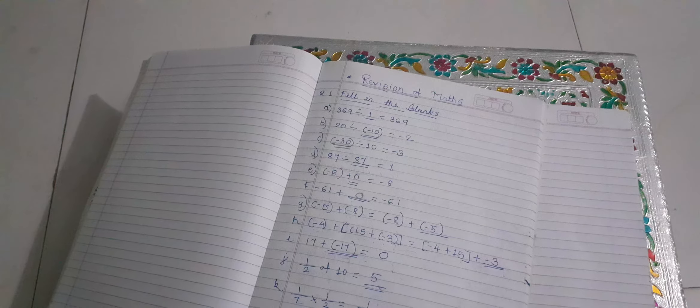Then, 15 divided by what gives 1.5? Which number is it? It's 10. That means we divide 15 by 10 and get the answer 1.5.